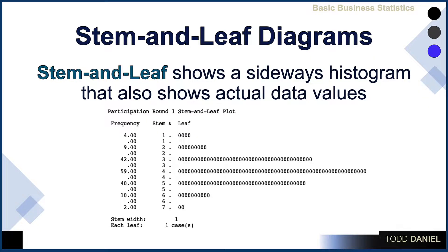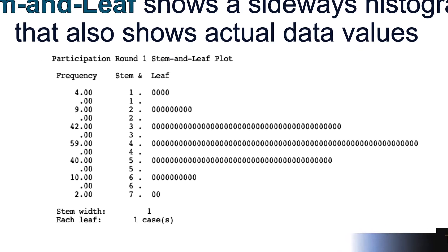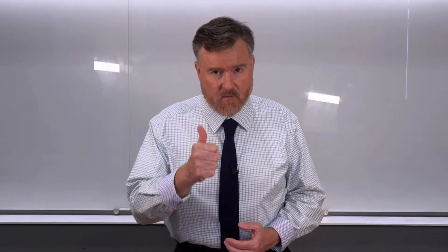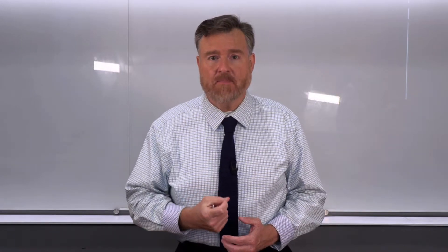Here's what I mean about stem and leaf diagrams being the best of both worlds. This is what a stem and leaf diagram looks like. This stem and leaf shows the rank order and the shape of the distribution for our quantitative data. We can see the frequency of every score in the data set, how many scores there were, and the shape. In fact, this rather resembles a histogram that has been turned sideways.